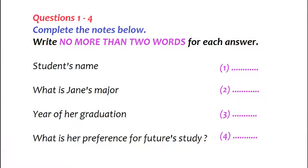The test is in four parts: part one, part two, part three, and part four. Now look at part one. You're going to hear a conversation between a student and an academic advisor. First you have some time to look at questions one to four.